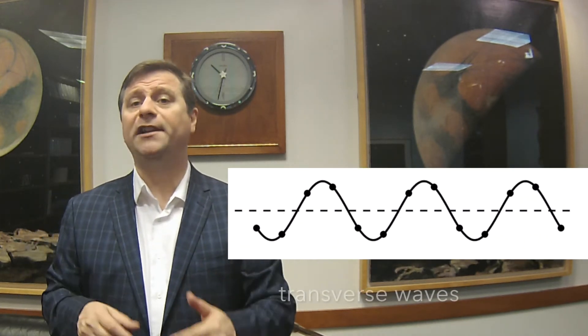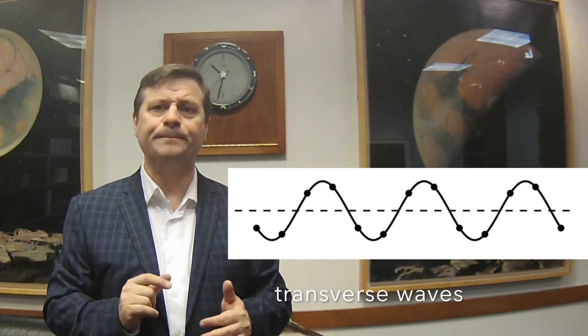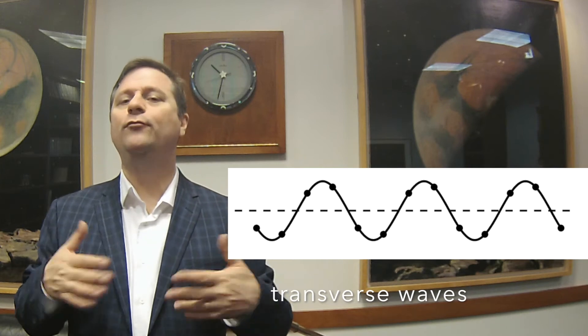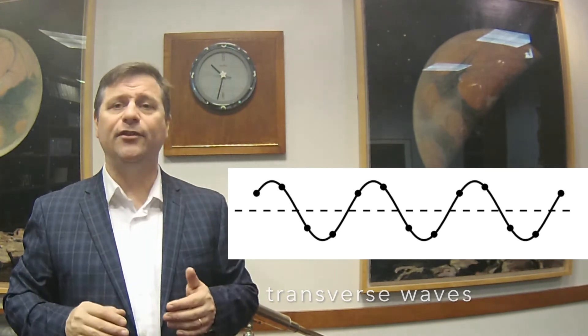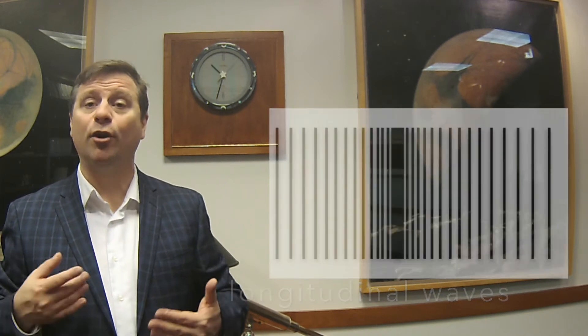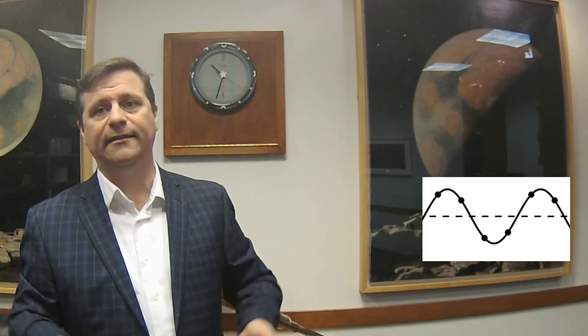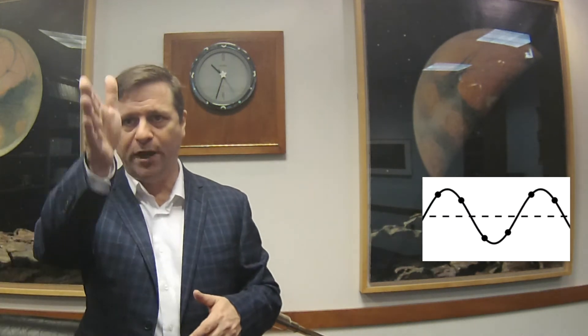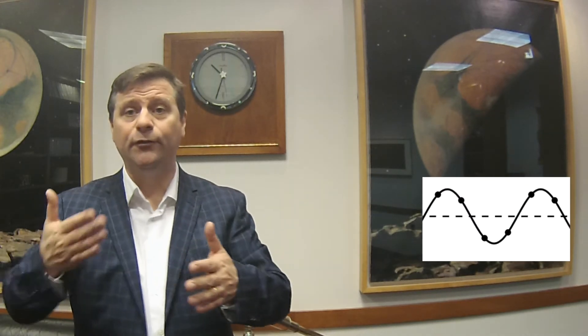In 1821, Fresnel and Young advanced even further. They proved that all light was a transverse wave and had no longitudinal component. Before then, people thought about two kinds of waves: compression waves where things compress and expand in the direction of travel — like sound — and transverse waves that go up and down perpendicular to the direction of travel, like water waves. Water waves go up and down as they travel across the ocean, and that's called transverse — perpendicular to the propagation of motion.